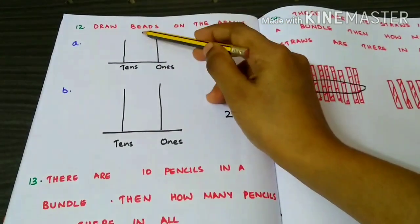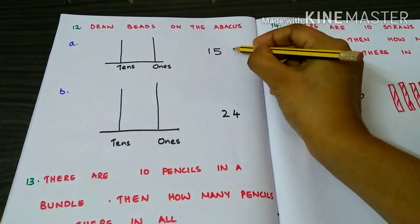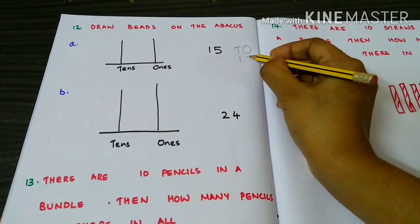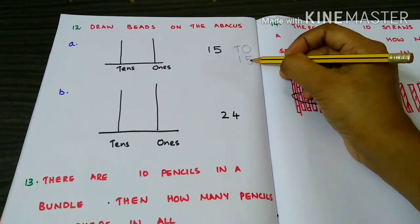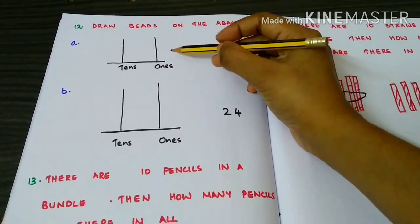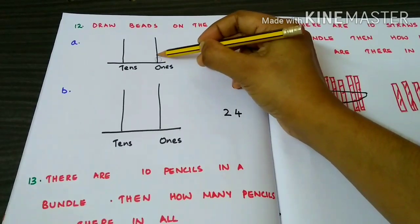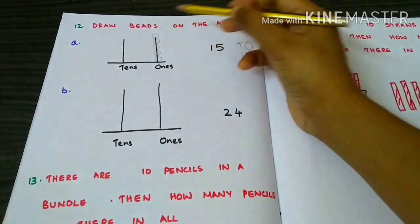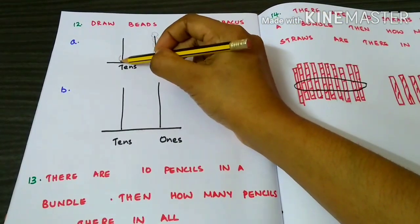Draw beads on the abacus. Fifteen. Fifteen has five ones and one ten. So you have to draw five beads on the ones place — one, two, three, four, five — and one bead on the tens place.